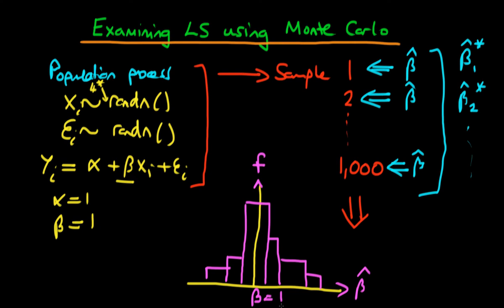We're also going to examine what happens to the variance of our least squares estimators as the sample size increases. We're going to start off with a sample size of 100, and then see how our estimates change as we define a new sample size of 1,000.